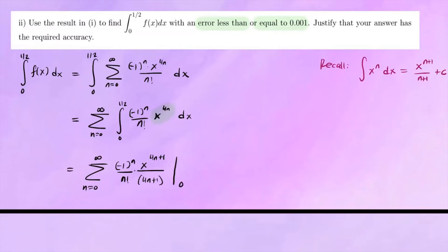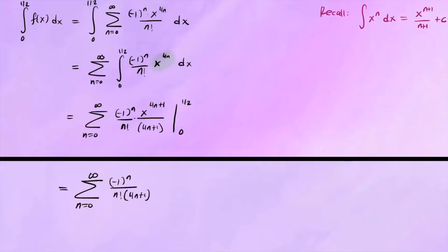We evaluate this from 0 to 1 half because it's a definite integral. Plugging in the upper limit of integration, 1 half, gives us the sum from 0 to infinity of negative 1 to the n over n factorial times 1 half to the power 4n plus 1, all over 4n plus 1. When we plug in the lower limit, 0, we just get 0 over 4n plus 1, so those terms go to 0.